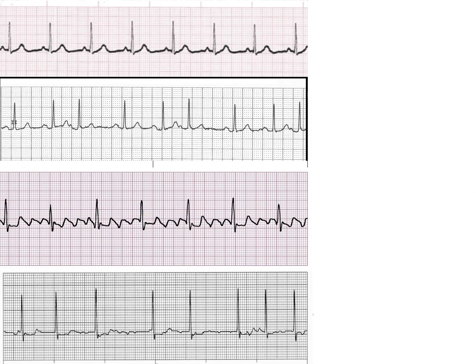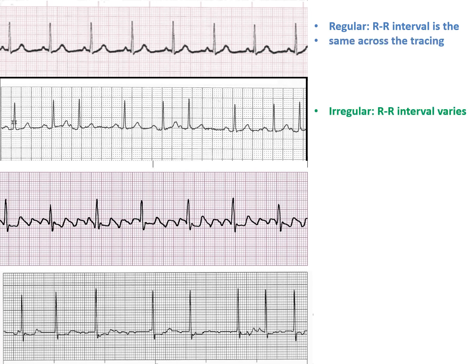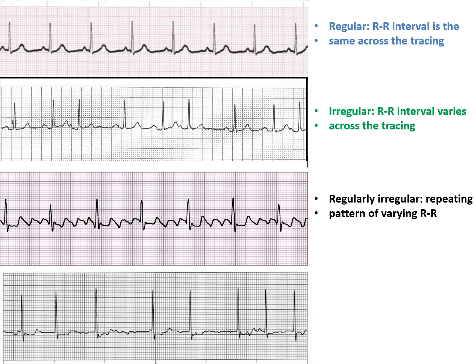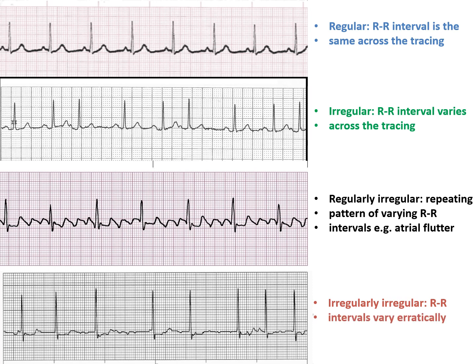Regular rhythm means the RR intervals are the same across the tracing. Irregular rhythm means the RR intervals vary across the tracing. It could be regularly irregular, which is a repeating pattern of varying RR intervals as seen in atrial flutter, or irregularly irregular, meaning RR intervals vary erratically, which we can see in atrial fibrillation.